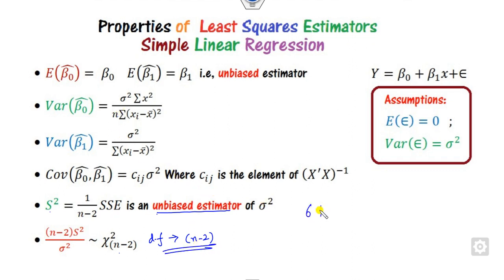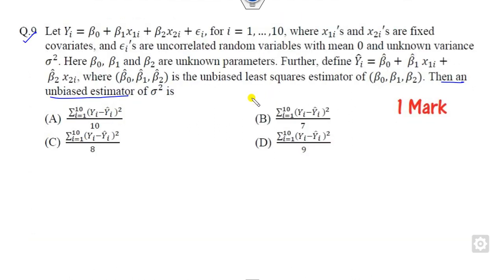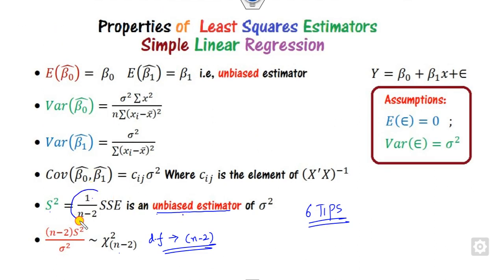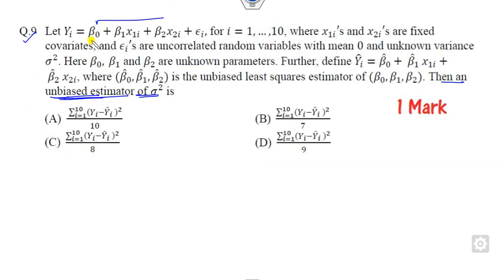Based on these six tips, you can solve any question related to least square estimation. For question 9, you need to find the unbiased estimator of sigma square. The denominator is n minus 2 when there are two unknown parameters, but here there are three unknown parameters, so instead of n minus 2, you use n minus 3 times SSE.